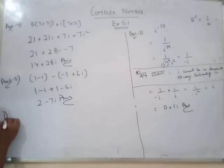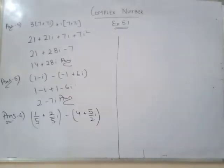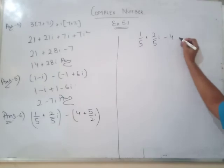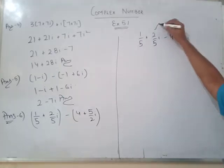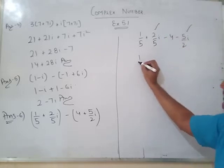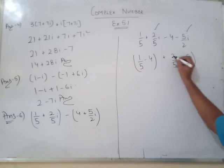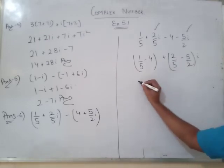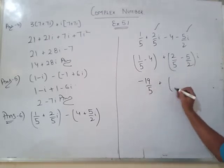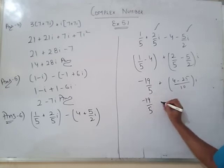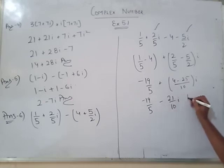Now we move on to question number 6 of NCERT. In the brackets it is given: 1 by 5 plus 2 by 5 iota, minus 4, or minus 5 by 2 iota. After solving the brackets step by step, we get minus 19 by 5 minus 21 by 10. This will be your answer.